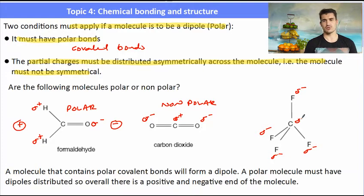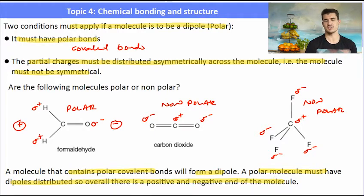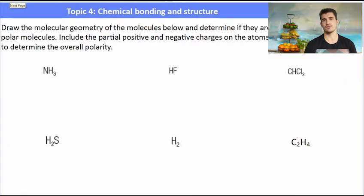Tetrafluoromethane: the fluorines will be negatively charged and the carbon in the middle positively charged, so it is also non-polar. A molecule that contains polar covalent bonds will form a dipole. A polar molecule must have those dipoles distributed so there is an overall positive and overall negatively charged end.